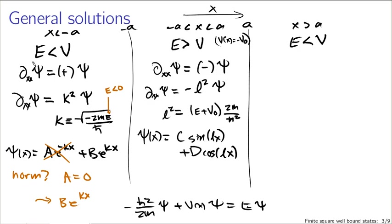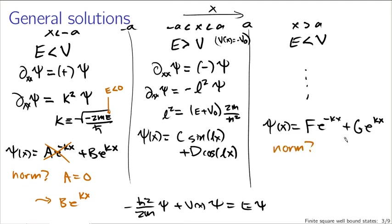The third region, for x greater than a, looks very much like the first region for x less than minus a, and the general solution is psi(x) = F e^{-kx} + G e^{kx}. For normalizability, we must set G equal to zero, since e^{kx} blows up as x goes to positive infinity. So the solution in this right region is psi(x) = F e^{-kx}. This is our general normalizable bound-state solution for the finite square well potential.